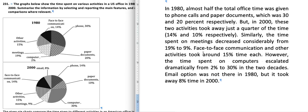Now coming to the body paragraphs: in 1980, almost half of the total office time was given to phone calls and paper documents, which was 30 and 20 percent respectively. But in 2000, these two activities took just a quarter of the time, that is 14 percent and 10 percent respectively. Similarly, the time spent on meetings decreased considerably from 19 to 9 percent. Face-to-face communication and other activities took around 15 percent each. However, the time spent on computers escalated dramatically from 2 percent to 30 percent in the two decades. Email was not an option in 1980, but it took 8 percent of time in 2000.